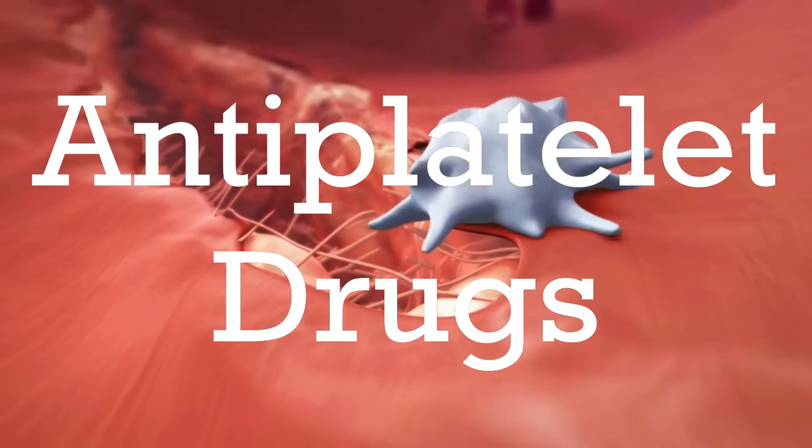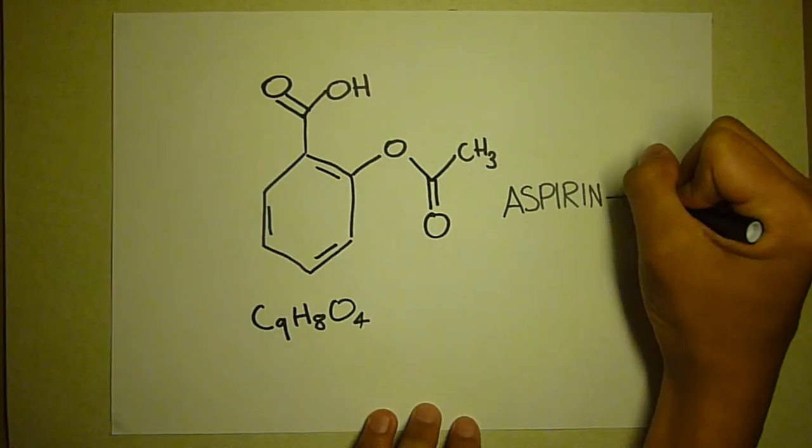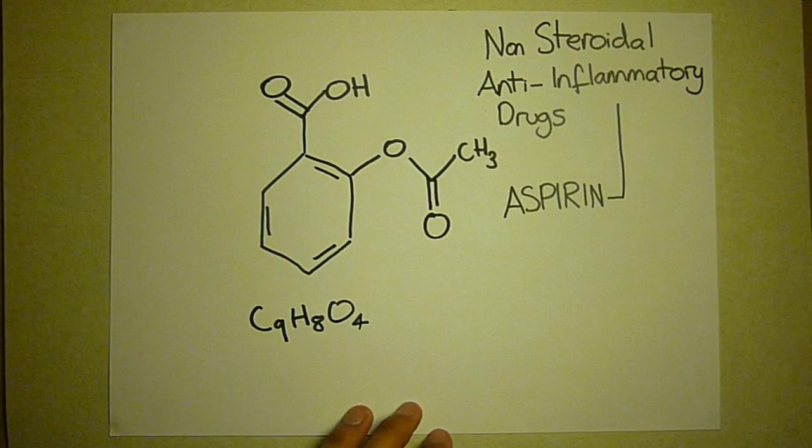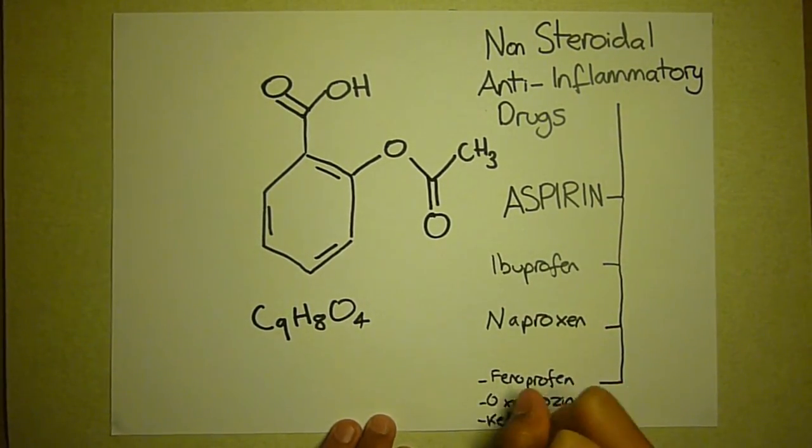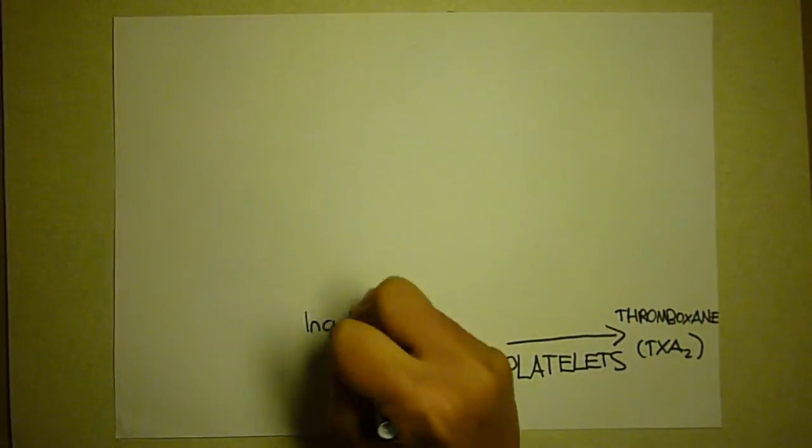Anti-platelet drugs prevent the platelets from amalgamating together. One of the most common drugs is aspirin, which belongs to a category called non-steroidal anti-inflammatory drugs, or NSAIDs, which includes ibuprofen, naproxen, and the like. Platelets use an enzyme to produce thromboxane, and aspirin inhibits this enzyme.